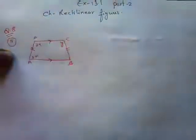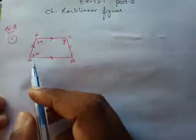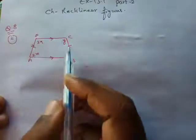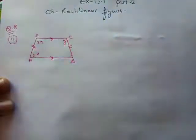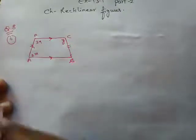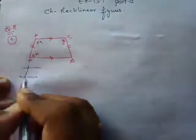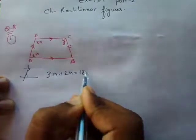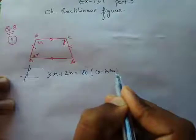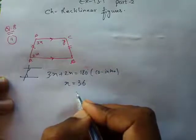For question 8 second part, the figure is an isosceles trapezium — a trapezium where the opposite sides that are not parallel are equal. It has four corners A, B, C, D. In a trapezium, when two lines are parallel and a transversal crosses them, the co-interior angles add up to 180°. So 3x plus 2x equals 180°, and from this you get x equals 36.